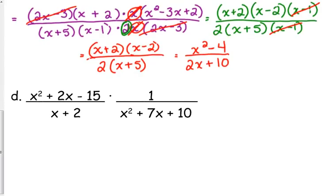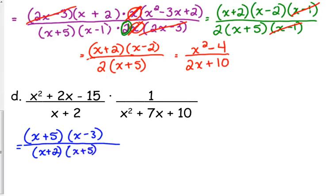Let's look at one more. x squared plus 2x minus 15 over x plus 2 times 1 over x squared plus 7x plus 10. So, first numerator, x plus 5 times x minus 3. There's nothing in the second numerator except a 1. We really don't need to write that. We've got x plus 2 in the first denominator. Just put it in its own set of parentheses there. And the second denominator would be x plus 5 times x plus 2.